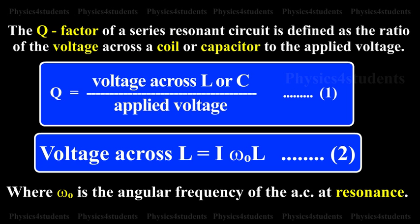Q is equal to voltage across L or C divided by applied voltage.